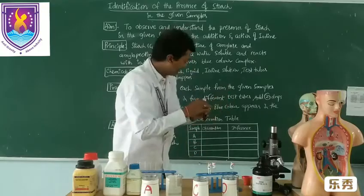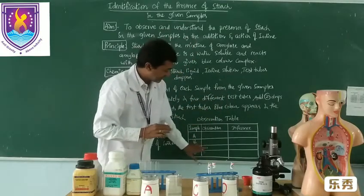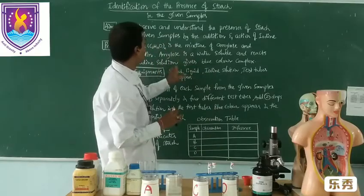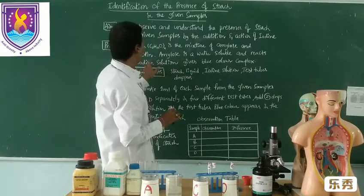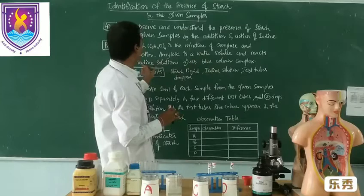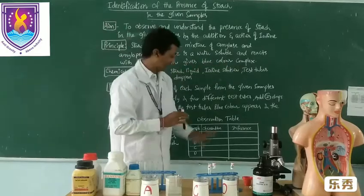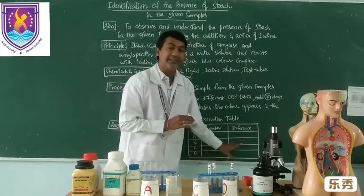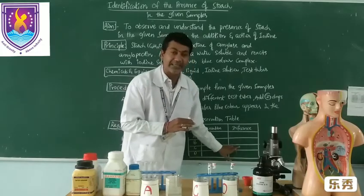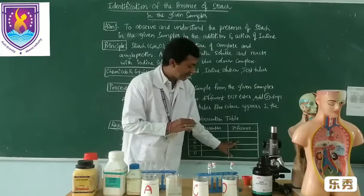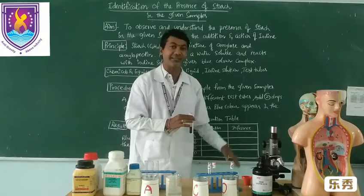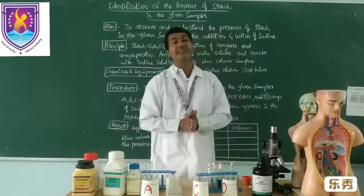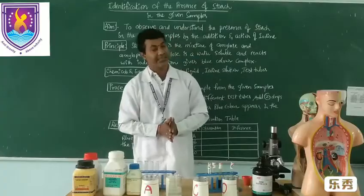Just confirm it here — this observation shows it turns into bluish colour. Our principle is that the starch sample reacts with iodine and gives a blue colour complex. So C turns into bluish colour. Hence the inference is: C sample contains the starch, and the remaining samples do not contain the starch solution — they contain some other solution. So this is our first starch identification experiment. Thank you very much.